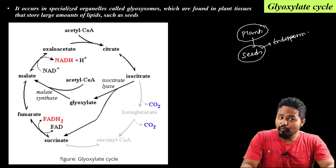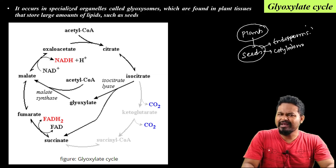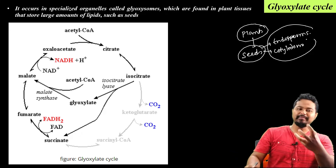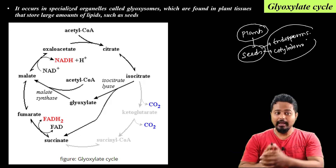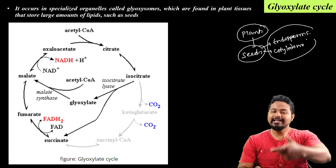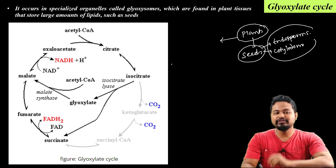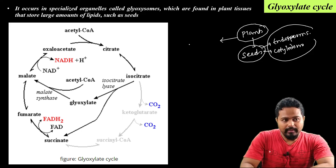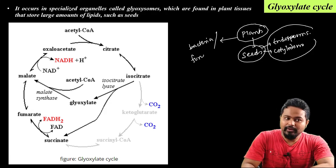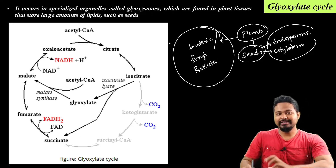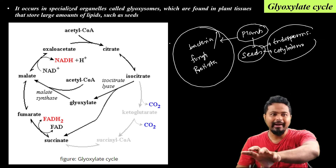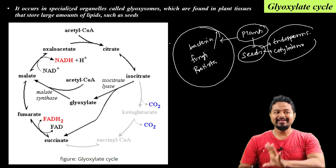The cycle mainly occurs in plant seeds, endosperm, glyoxysomes, and cotyledons — particularly in newly formed cotyledons. It also occurs in bacteria and fungi. So in these organisms, lipids can be directly converted to glucose via the glyoxylate cycle.